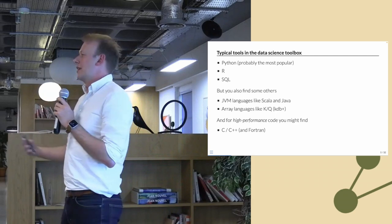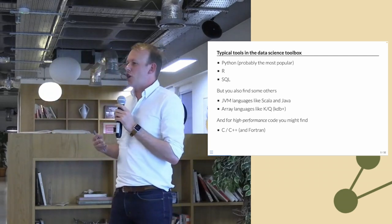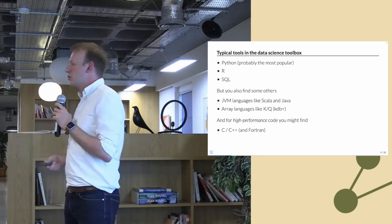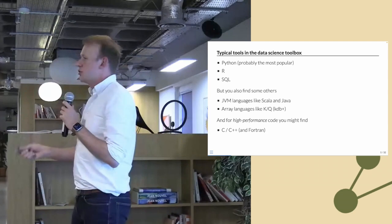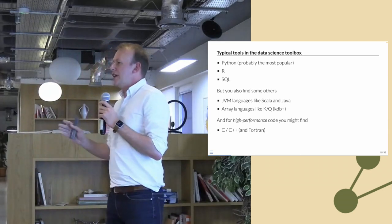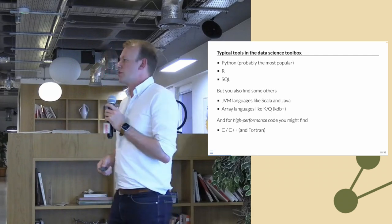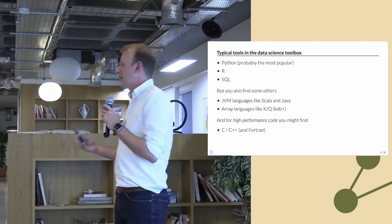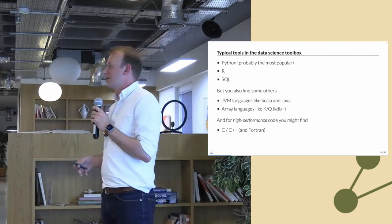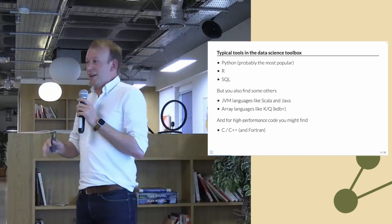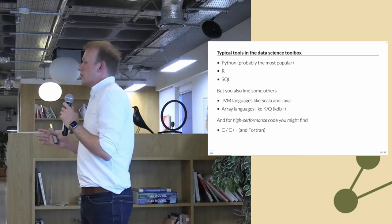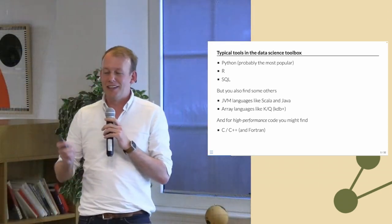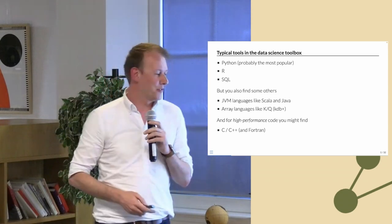If we think about the typical data science stack, Python is probably number one in terms of most commonly used languages. R is also pretty popular, and SQL is super popular — those are probably the top three. Depending on the context, you'll also find JVM languages like Scala and Java, array languages like K and Q, particularly KDB+ for high-performance databases in finance, and compiled languages like C++ and Fortran for writing high-performance code. Fortran is still used — NVIDIA is still coming out with new compilers, so don't forget about it.